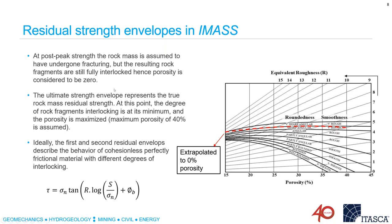For the ultimate strength envelope — the true residual strength — we assume the rock mass has undergone complete bulking and the resulting fragment interlocking is at its minimum. Based on our experience doing simulations for caving operations, we think a maximum porosity of 40% is a reasonable cutoff that the rock mass can eventually bulk up to. So we are moving from 0% porosity to 40% porosity, evaluating R, and that gives us the degradation of shear strength for the material. We then convert that to Hoek-Brown properties. Ideally the first and second residual envelopes describe the behavior of cohesionless, perfectly frictional material with different degrees of interlocking.